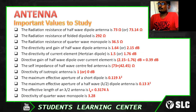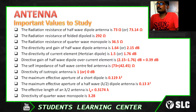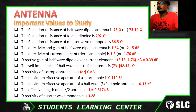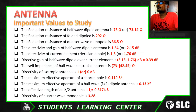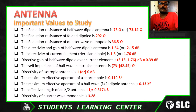There are 12 values. The radiation resistance of a half wave dipole antenna is 73 ohm or 73.14 ohm. The next value is the radiation resistance of a folded dipole, which is 292 ohm. The radiation resistance of a quarter wave monopole is 36.5 ohm.